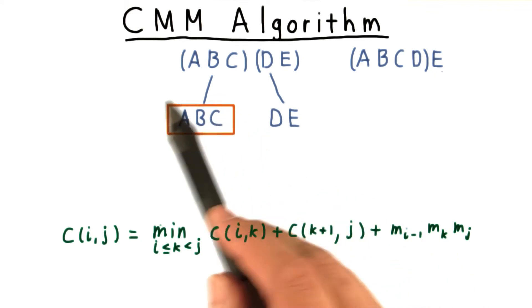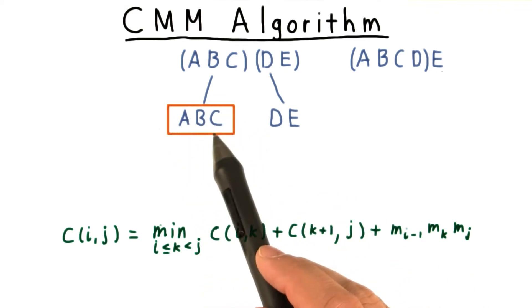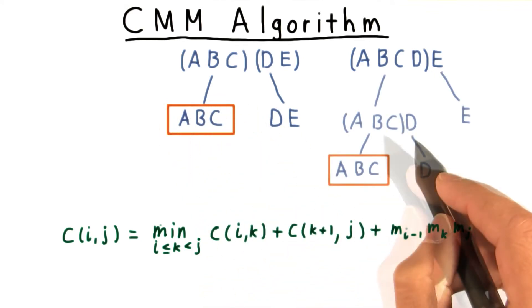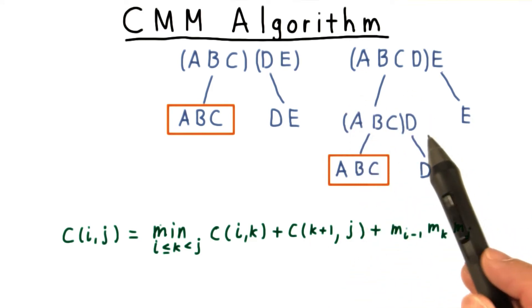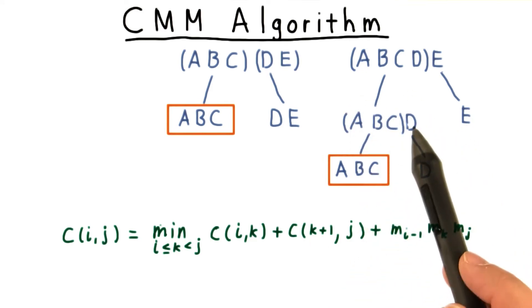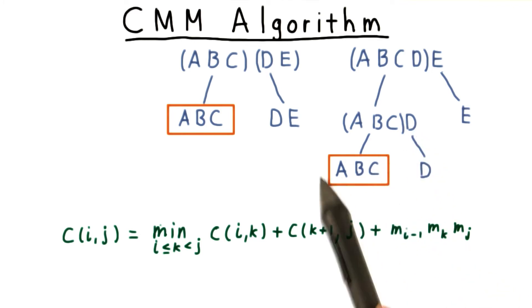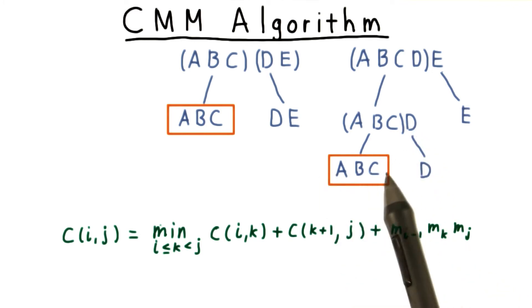Clearly, we will have to compute the minimum cost of multiplying ABC in the left problem. But we are also going to have to compute it on the right as well, since we need to pull D off from this chain at some point. And we end up doing all the work involved in figuring out how best to multiply ABC over again.